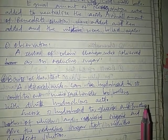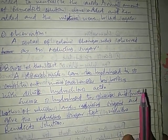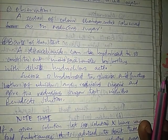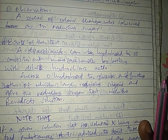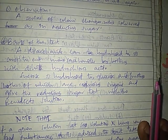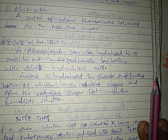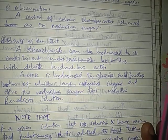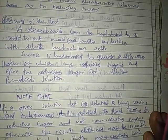To summarize the procedure: add HCl, boil, cool, add sodium hydroxide to neutralize the HCl, then add Benedict's solution. The observation is the same as for reducing sugar — a series of color changes is observed. The basis is that a disaccharide can be hydrolyzed to its constituent monosaccharides by boiling with dilute hydrochloric acid. Sucrose is hydrolyzed to glucose and fructose, both of which are reducing sugars and give the reducing sugar test with Benedict's solution.